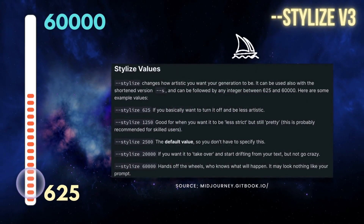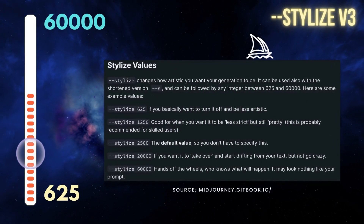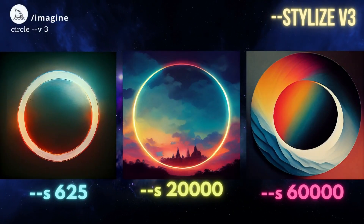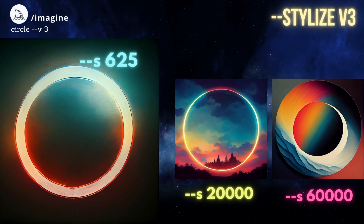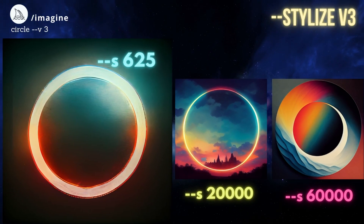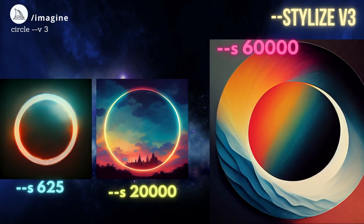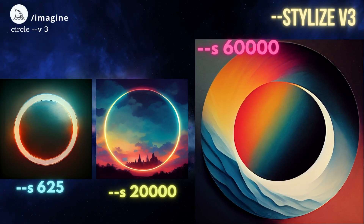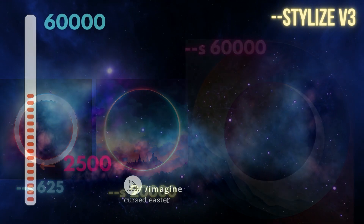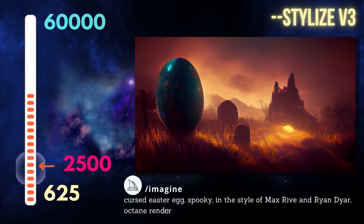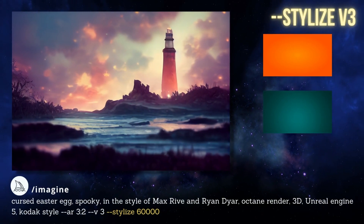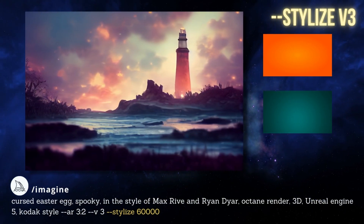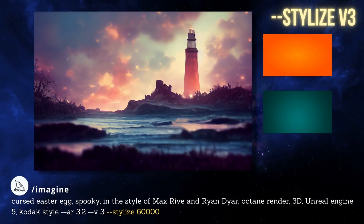Other commands like Stylize have seen a big change. Stylize tells Mid-Journey how much of the Mid-Journey aesthetic you want. In version 3, Stylize ranged from 625 to 60,000. A lower style number told Mid-Journey not to put any Mid-Journey styling in your image, and this tended to create simpler images. On the other end, you're telling Mid-Journey to just go for it — make something beautiful even if it means ignoring your prompt a bit. The default Stylize value in version 3 is 2,500.